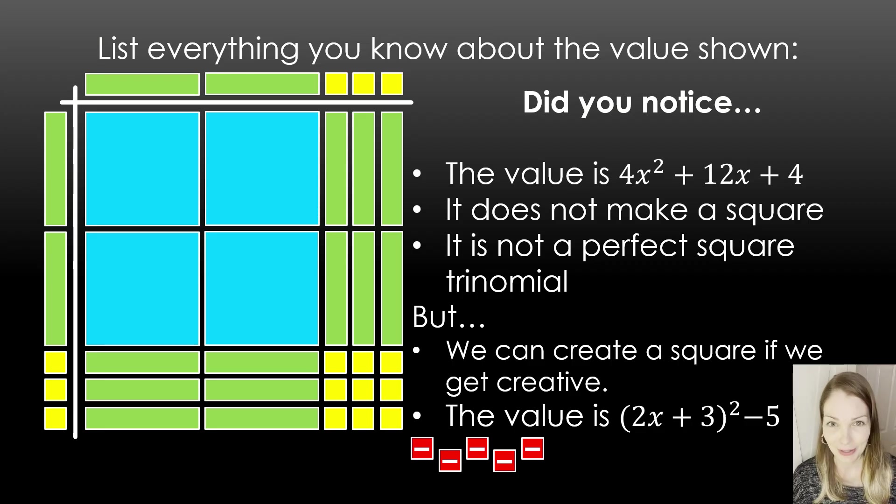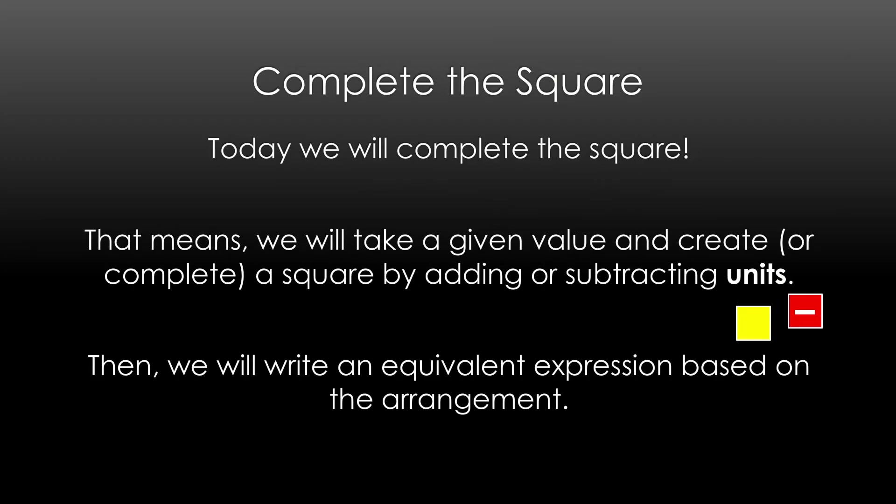Okay, so we're going to do some of these. If that was a little bit like, whoa, where did that come from? Let's try some more out. Okay, so today we're going to complete the square. That means we're going to take a given value and create a square or complete a square. And we may need to add or subtract some units to do so. Then we're going to write an equivalent expression based on what that arrangement looks like.